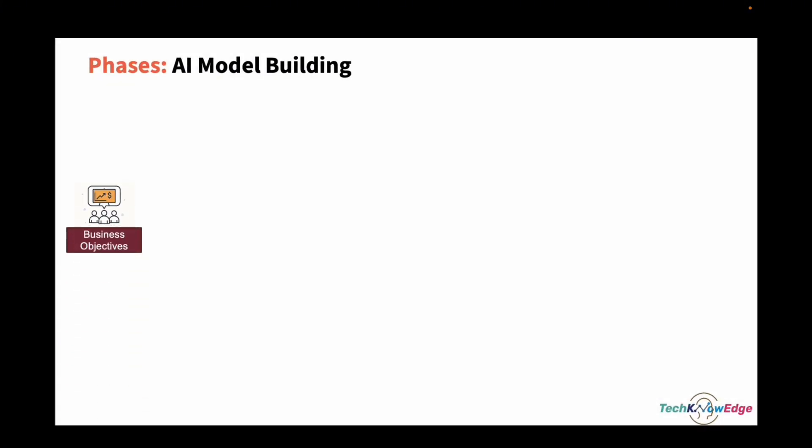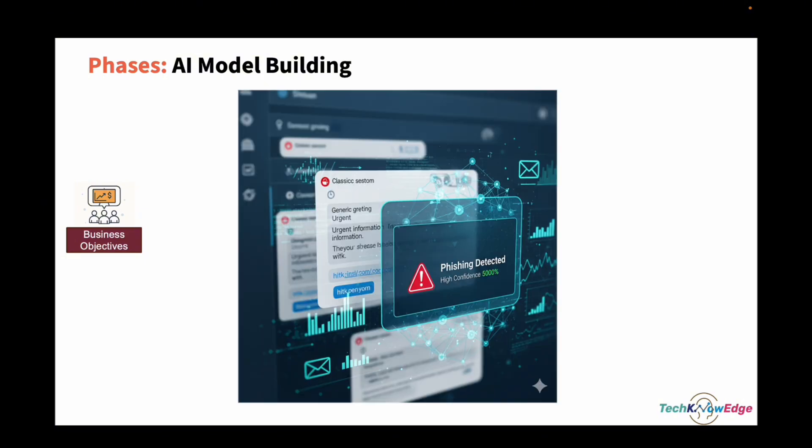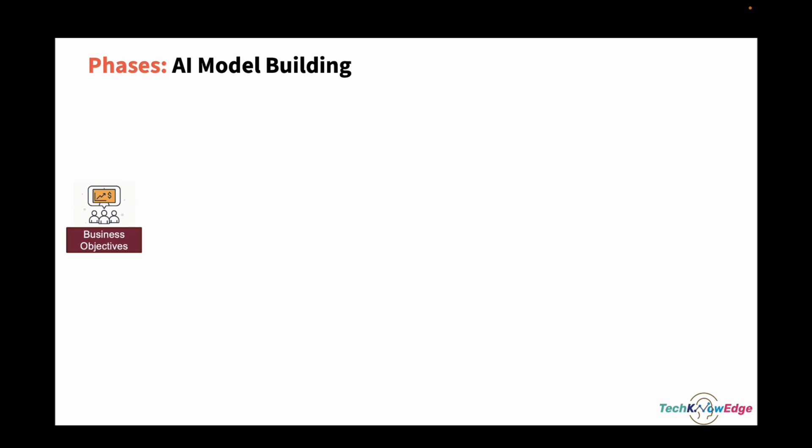First, define the business objective. Before jumping into code or models, pause and ask yourself the most important question: can this problem be solved with a simple software solution, or does it truly require AI or machine learning to be effective? For instance, detecting phishing emails — ML might help. But just showing a static message on a website, that's not AI-worthy. The key here is clarity. Understanding your business use case sets the direction for everything that follows.